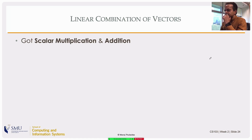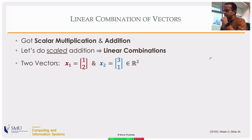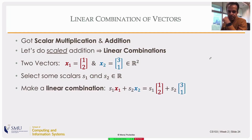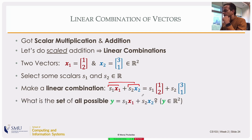Let's talk about linear combinations. We did scalar multiplication and we did addition, so nothing prevents us from doing a scalar multiplication and then subsequently an addition — a scaled addition — and that is a linear combination. I have x1, a vector in two dimensions: [1, 2]; x2, another vector in two dimensions: [3, 1]. I can scale the first one by some number and the second one by a different number and then add them. That result will also be a member of R2 because each one of those operations is closed.